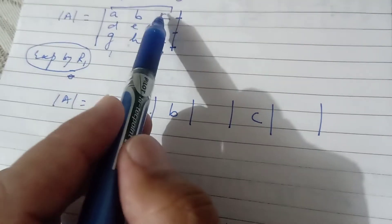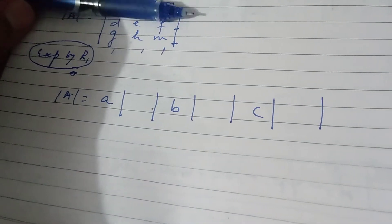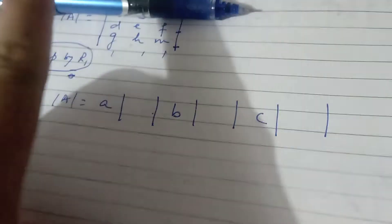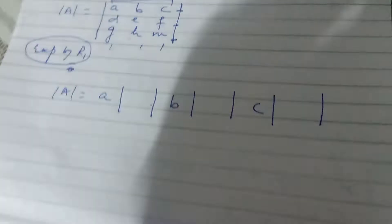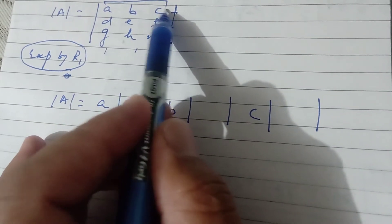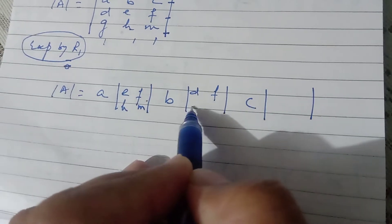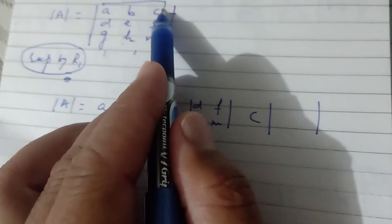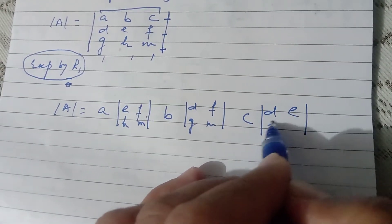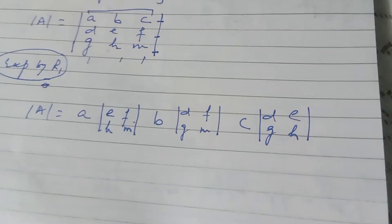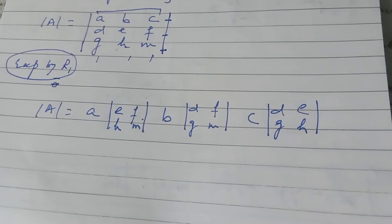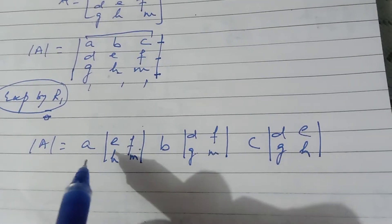When you write A, hide the row and column that A belongs to — use two pencils if you like to cover them. The first row and first column are hidden, and the four remaining entries visible are E, F, H, and M. For B, hide the first row and second column — what remains is D, F, G, M. For C, hide the first row and third column — what remains is D, E, G, H. Each time, 4 entries remain and you write them as a 2x2 determinant in order.